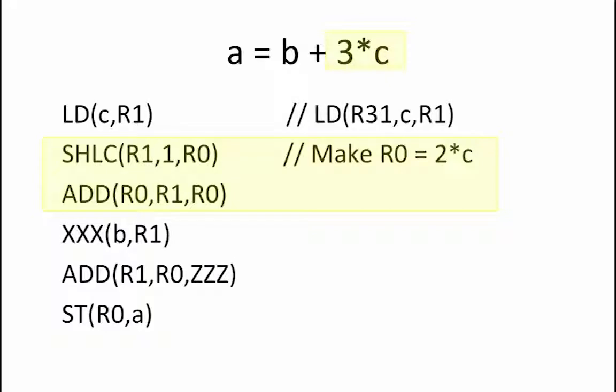Note that we use the constant version of the shift left operation since the amount to shift is given by a constant in our instruction rather than being read from another register. The next instruction is provided for us and it adds R0 which equals 2 times C to R1 which equals C in order to produce 3 times C. This intermediate result is then stored back into R0.